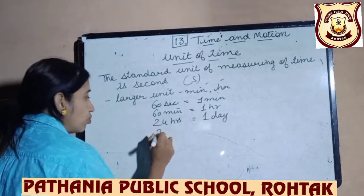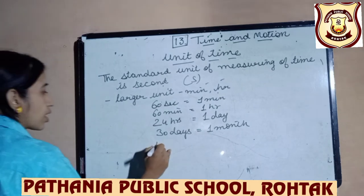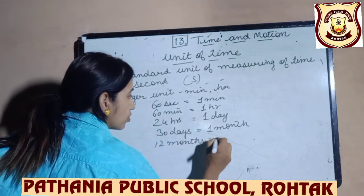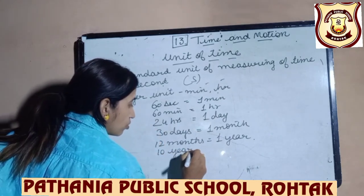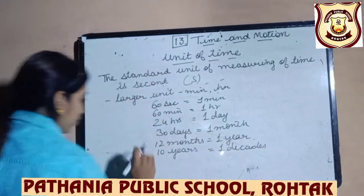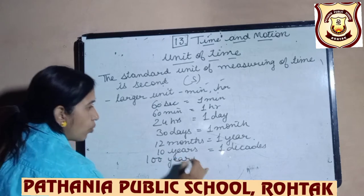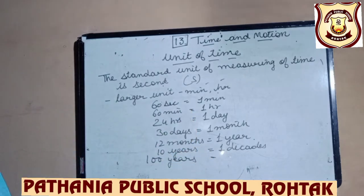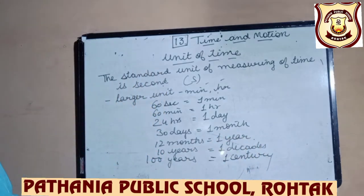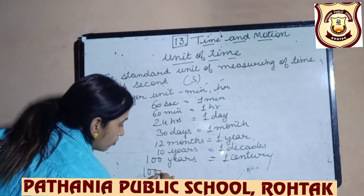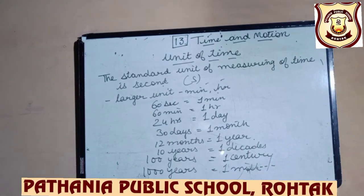Continuing the conversions: 30 days equals 1 month, 12 months equals 1 year, 10 years equals 1 decade, 100 years equals 1 century, and 1000 years equals 1 millennium.